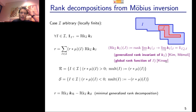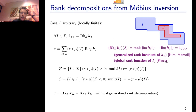So we have a theory that, as soon as we can apply Möbius inversion, allows us to prove existence and uniqueness of minimal rank decompositions. But a number of questions arise immediately.